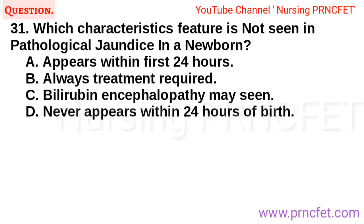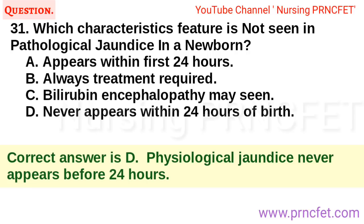Question 31: Which characteristic feature is not seen in pathological jaundice in a newborn? A. Appears within first 24 hours. B. Always treatment required. C. Bilirubin encephalopathy may occur. D. Never appears within 24 hours of birth. Correct answer is D. Physiological jaundice never appears before 24 hours.